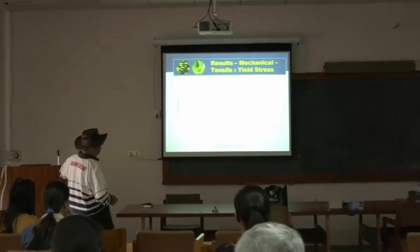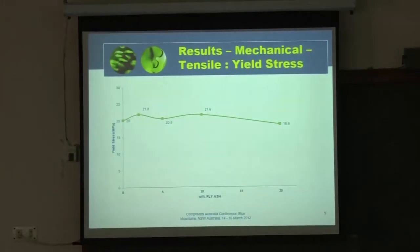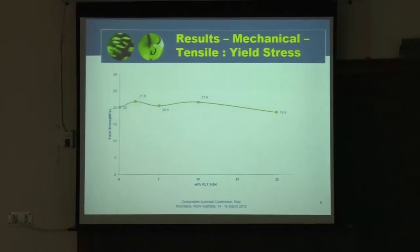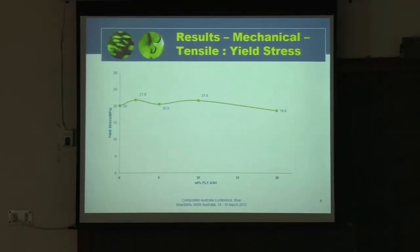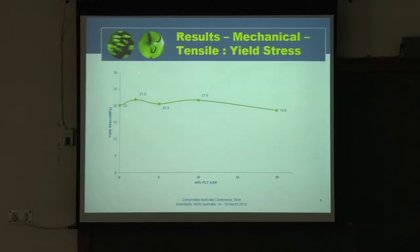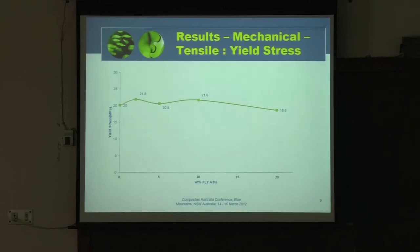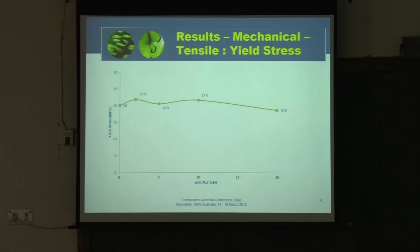The mechanical results show that if you look at the yield stress, even when we put up to 20 weight percent fly ash, the yield stress is almost constant. It may go up a little bit — from 20 to 22 and then 25 — but it is almost a straight line, parallel. From a mechanical engineering point of view, fly ash and high density polyethylene is a good combination — the yield strength remains at least the same as plain high density polyethylene.